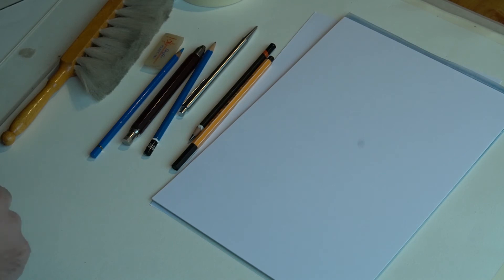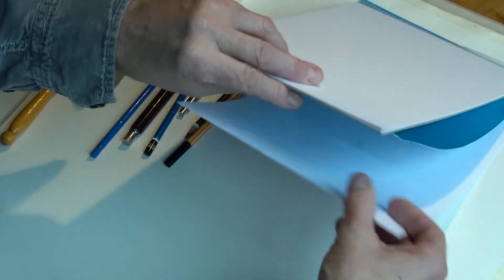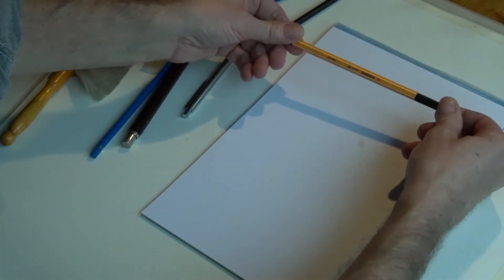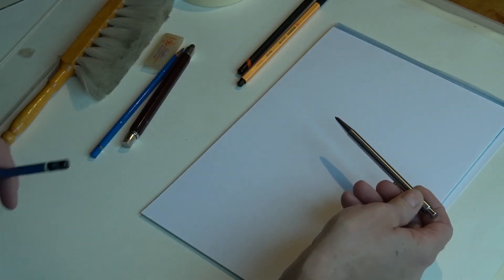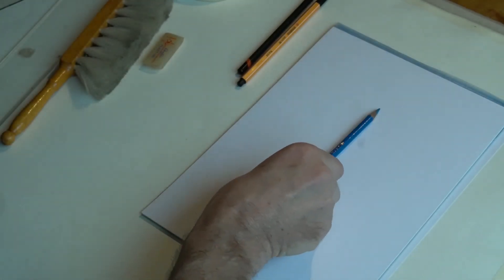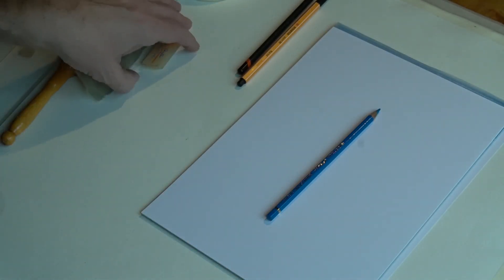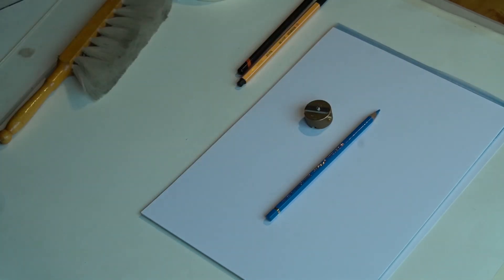Aber einige andere Sachen. Ihr braucht alle euren Zeichenblock oder ein einfaches weißes Blatt DIN A4 Papier. Ihr braucht noch einen schwarzen Stabilo, und dann vielleicht, wenn ihr das nicht gerade habt, einen Kugelschreiber tut es heute auch mal. Und was ihr auf jeden Fall aber braucht, ist ein blauer Buntstift zum Vorzeichnen. Was ihr nicht braucht ist ein Radiergummi. Einen Spitzer braucht ihr noch.